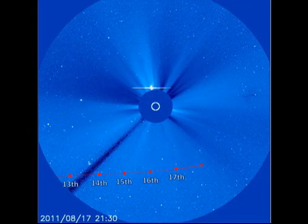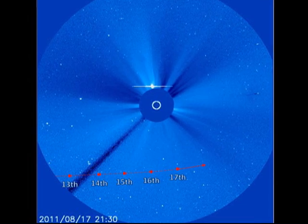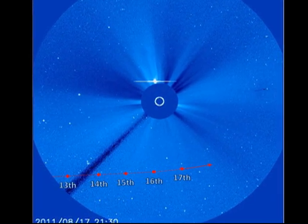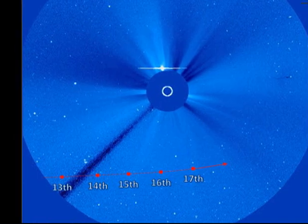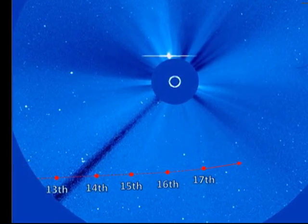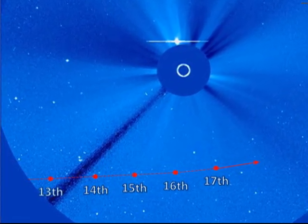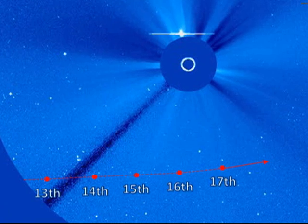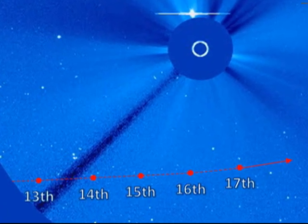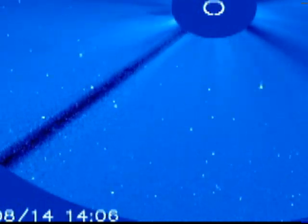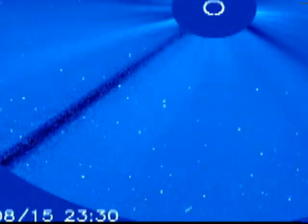Moving from left to right across the image. Here is a map of its path over the five days that we observed it. It seems to be moving at a relatively constant rate across the southern part of the image. I will run the same movie again but now just showing the magnified part of the southern hemisphere where the object traverses.